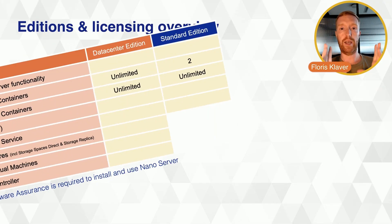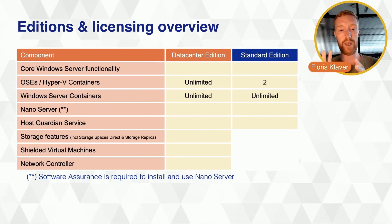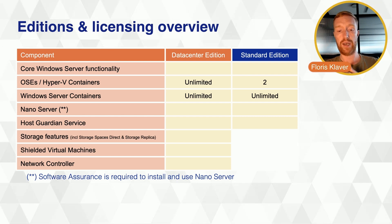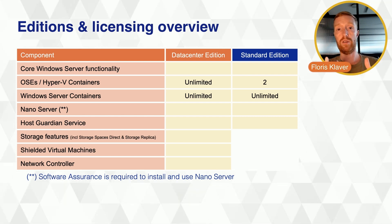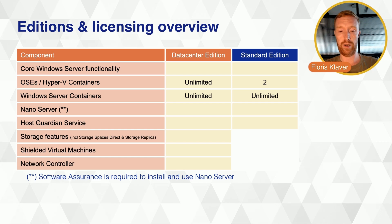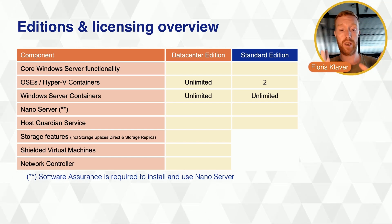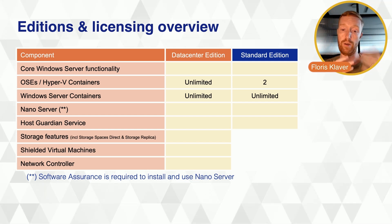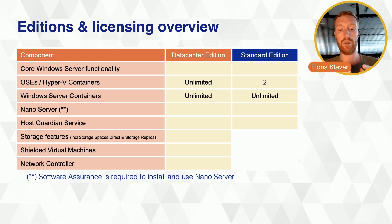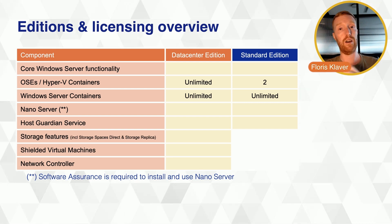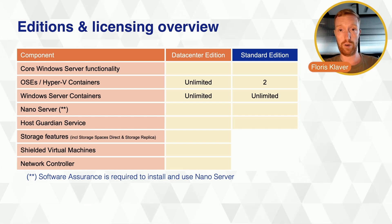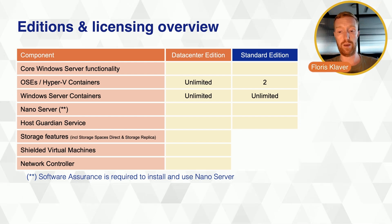Looking at the editions further, Windows Server Datacenter also has some feature differences, which are called out on the screen. In the bottom left you can see the components that make up Windows Server and how they're available for Datacenter or Standard Edition. The biggest difference is the unlimited virtual machines in Datacenter versus two in Standard, but there are also storage features included in Datacenter that aren't in Standard. You also have the option of shielded virtual machines and a network controller in Datacenter that you don't have in Standard.